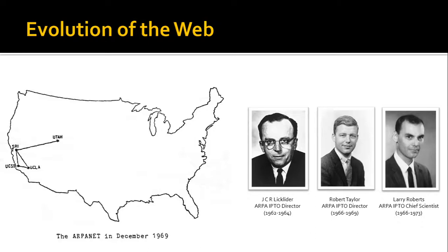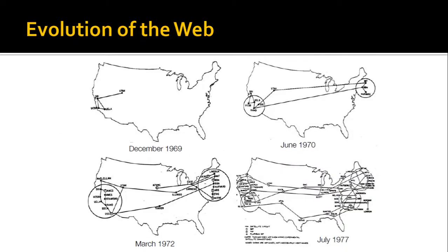The second letter sent was 'O', and the third letter was supposed to be 'G', but the system crashed. Nevertheless, that was the birth of a new era — the era of the internet. Thanks to the architects like J.C.R. Licklider, Robert Taylor, and Larry Roberts, who were instrumental in connecting different computers situated in different geographic locations and sending messages to each other. Gradually, more servers were added to the internet, and by 1977 the two coasts were connected in a set of complex connections.